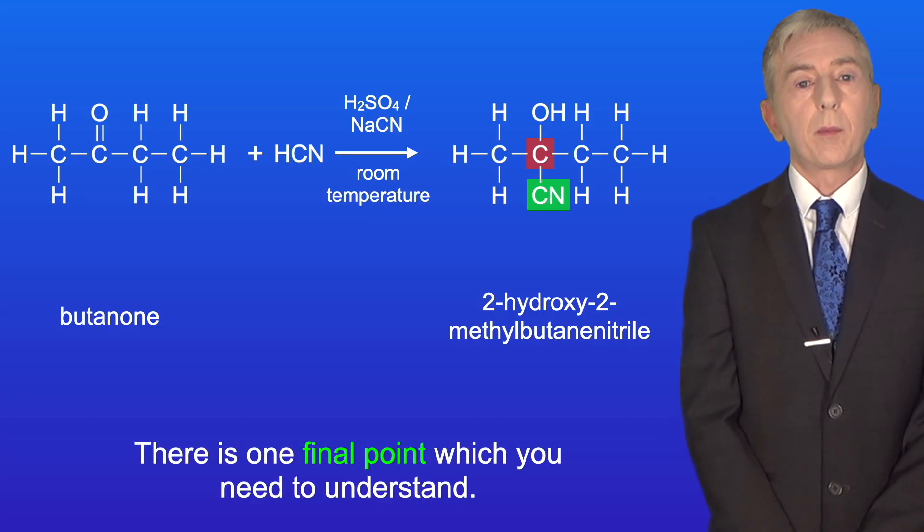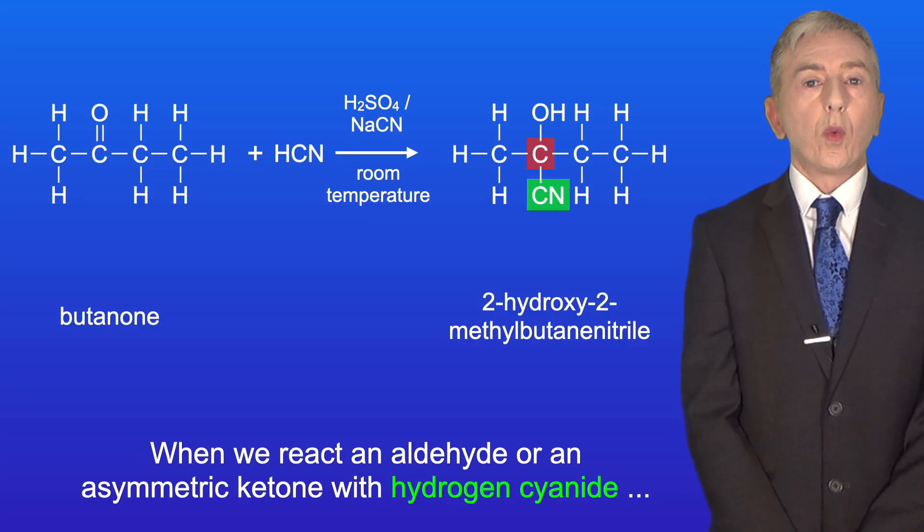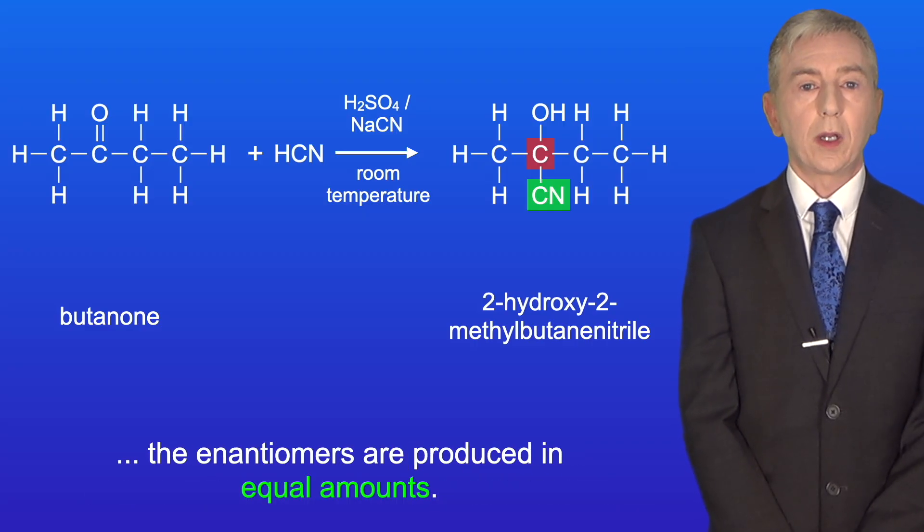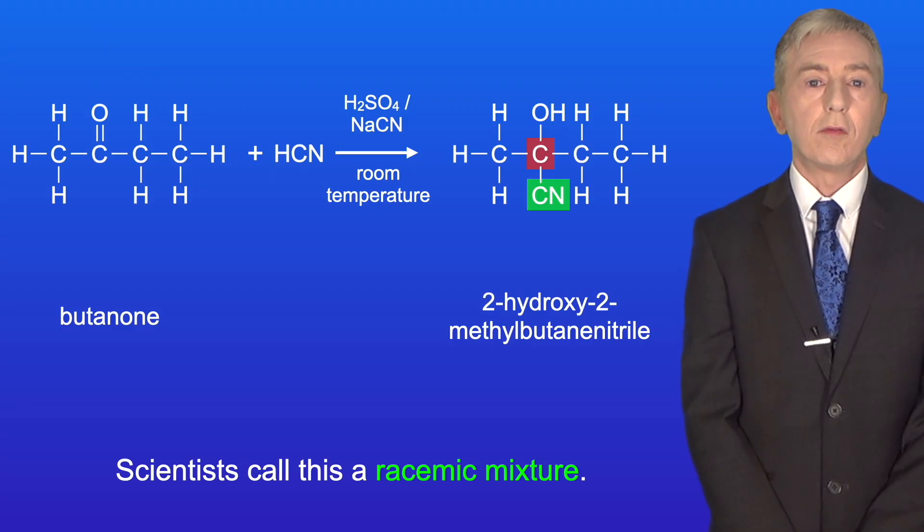Now there's one final point which you need to understand. When we react an aldehyde or an asymmetric ketone with hydrogen cyanide, the enantiomers are produced in equal amounts. Scientists call this a racemic mixture.